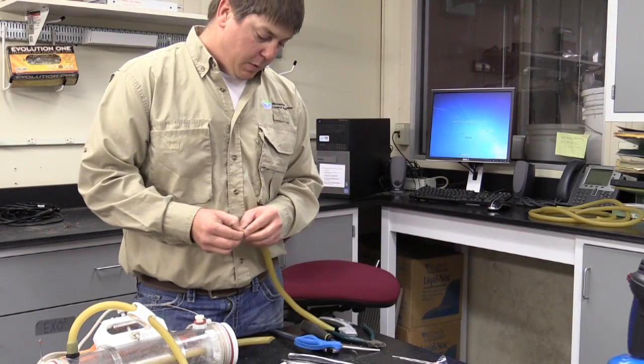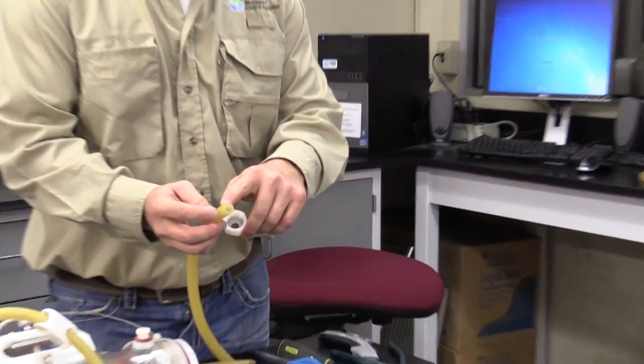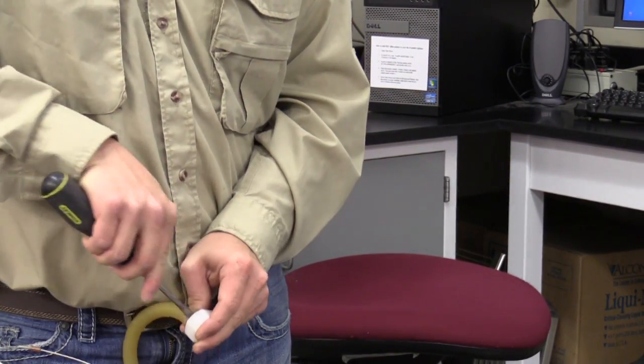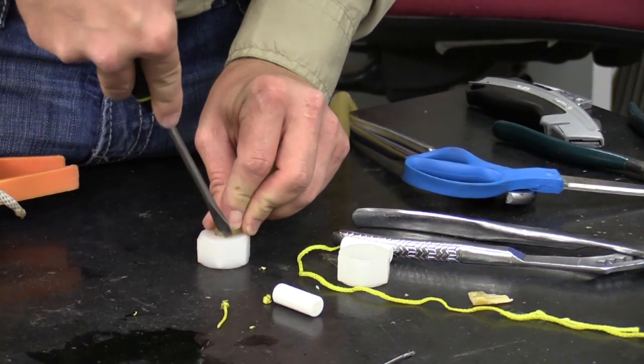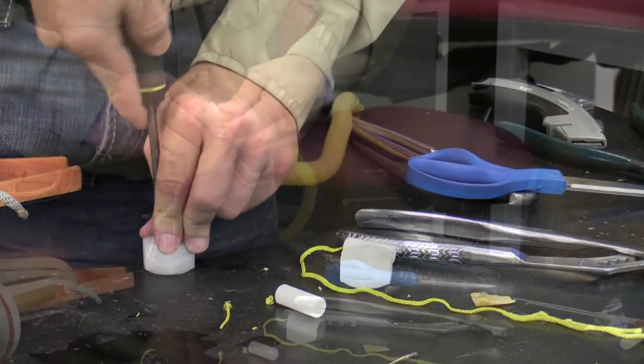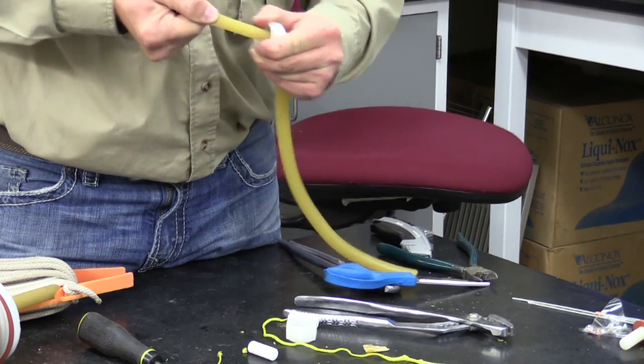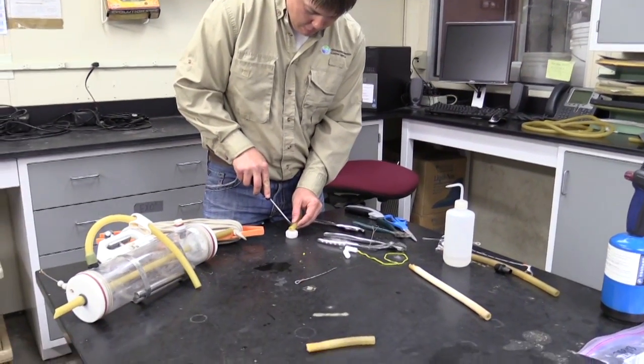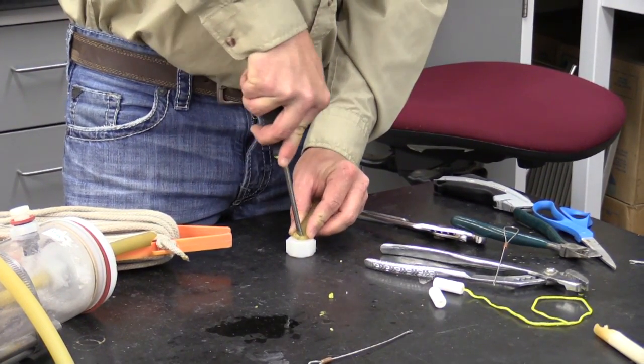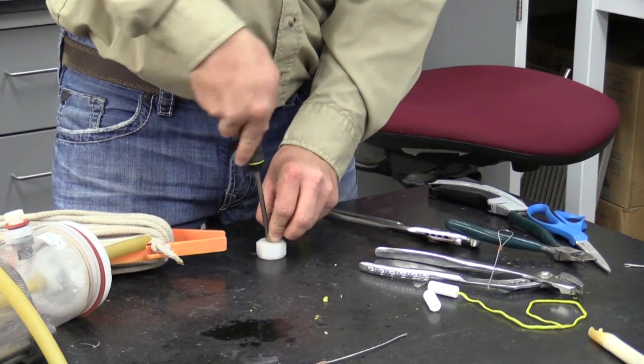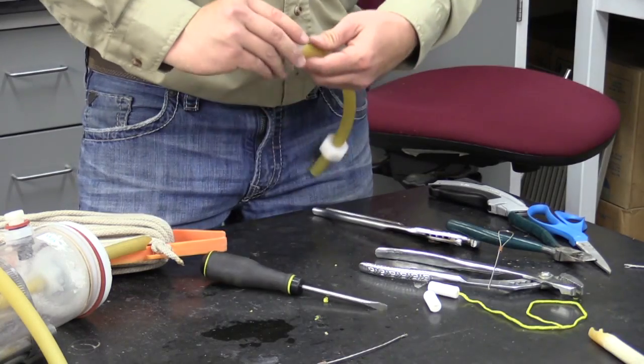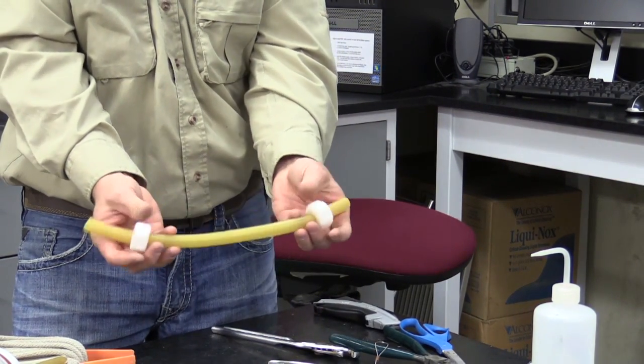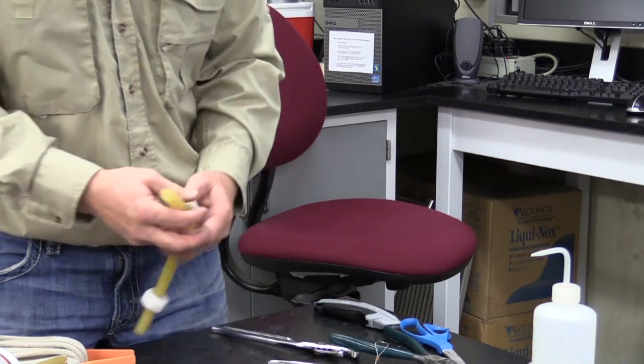This next part can be a little tricky. You have to try to get this hose into this nut here. A lot of times I'll try to get it started with a screwdriver. It takes a considerable amount of twisting and finagling. But it will go. So once you get the one side on, you want to do it.